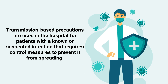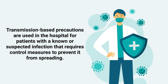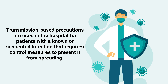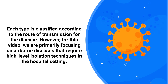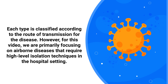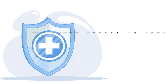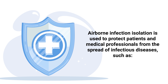Transmission-based precautions are used in the hospital for patients with a known or suspected infection that requires control measures to prevent it from spreading. The three primary types include contact precautions, droplet precautions, and airborne infection isolation. Each type is classified according to the route of transmission for the disease. This video primarily focuses on airborne diseases that require high-level isolation techniques in the hospital setting.